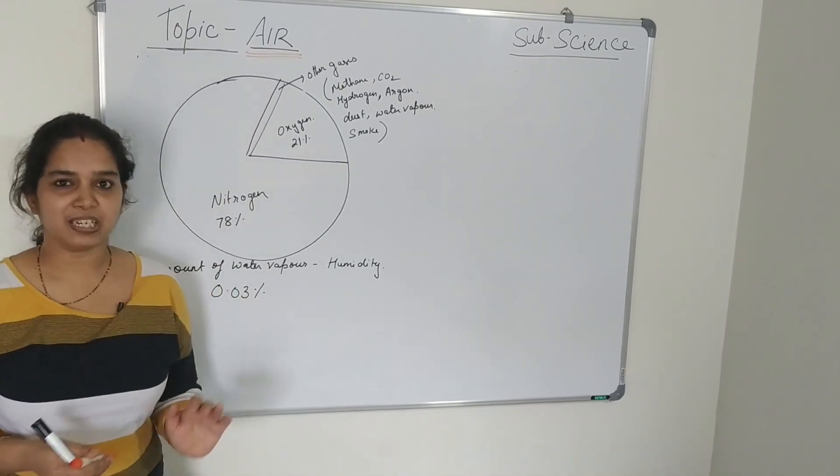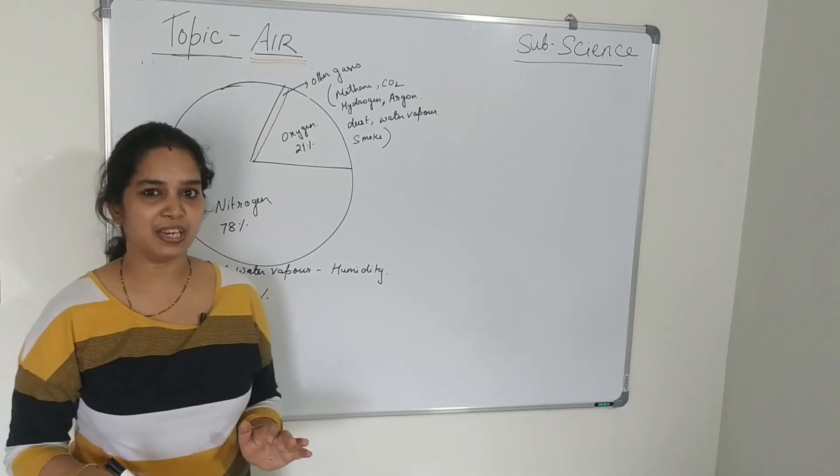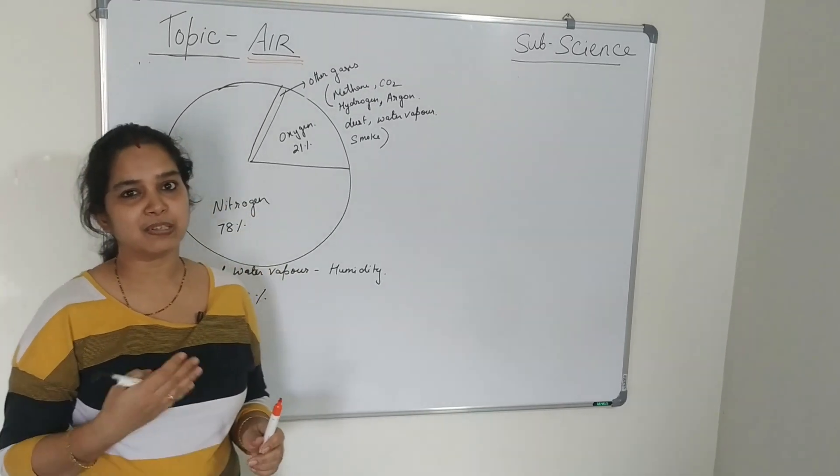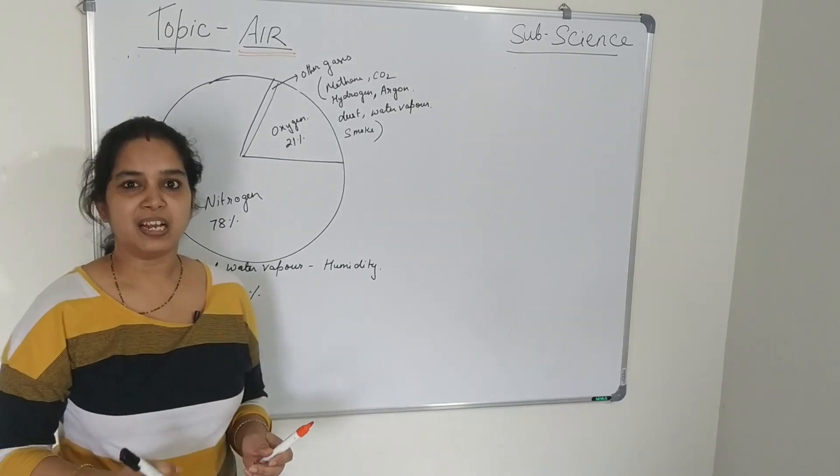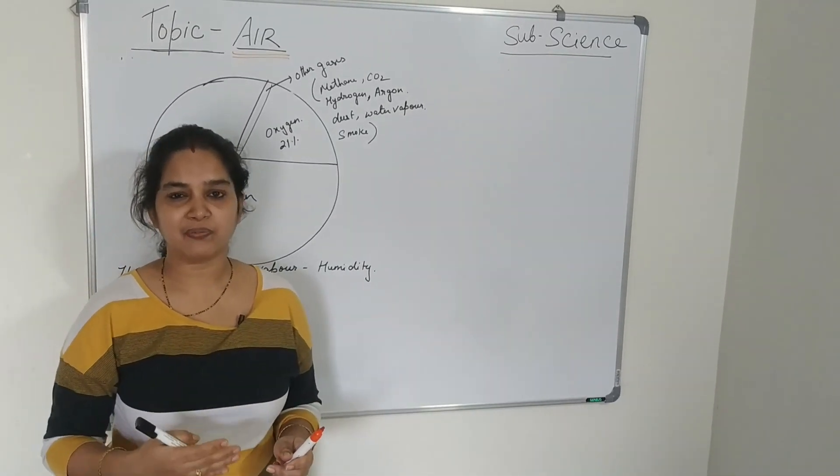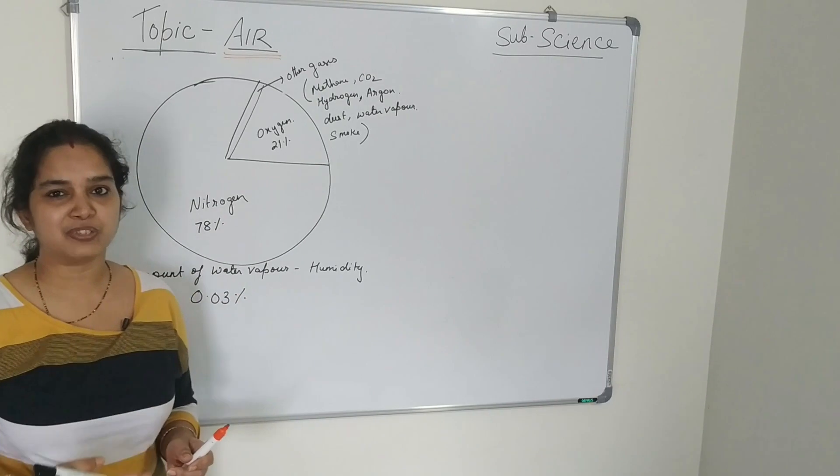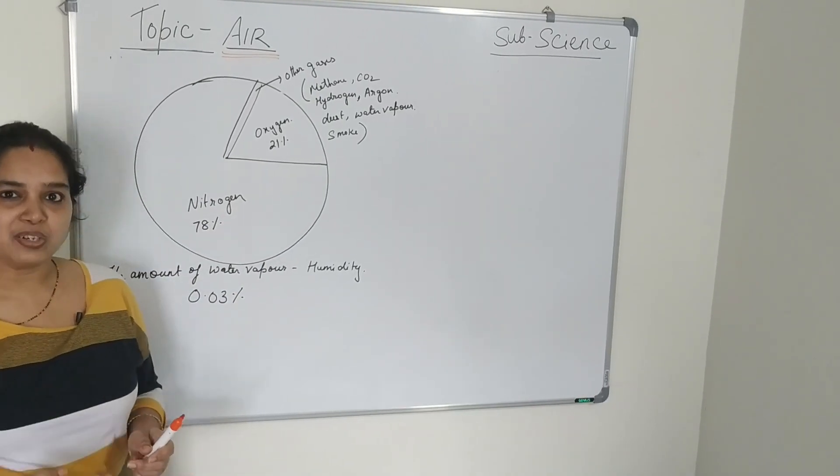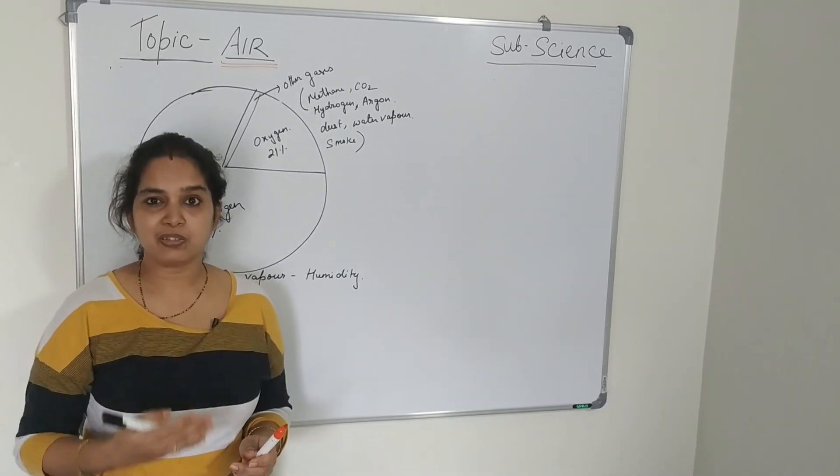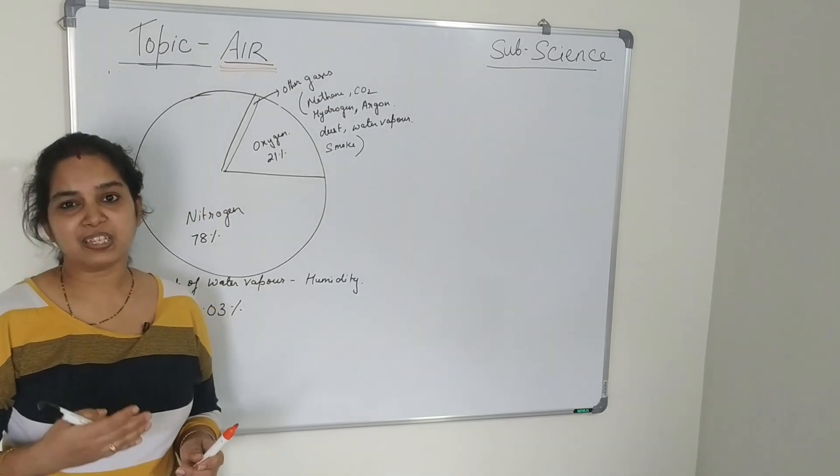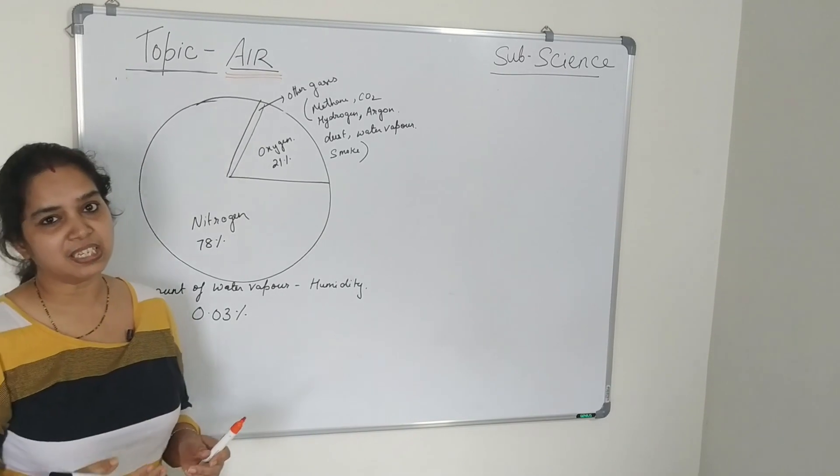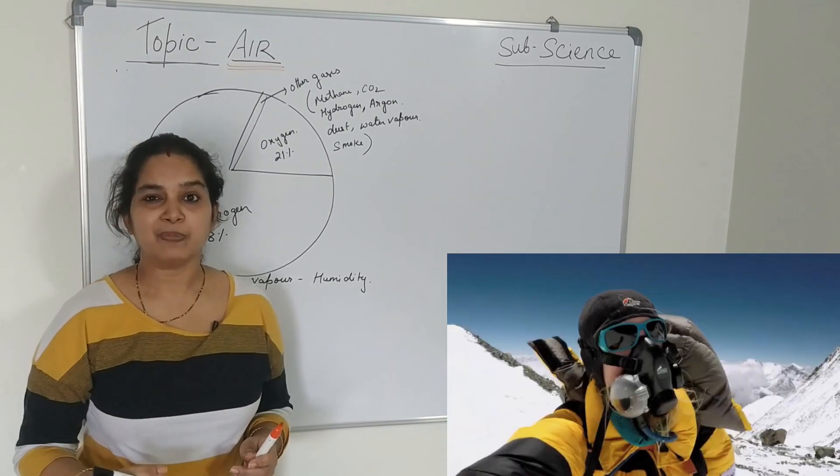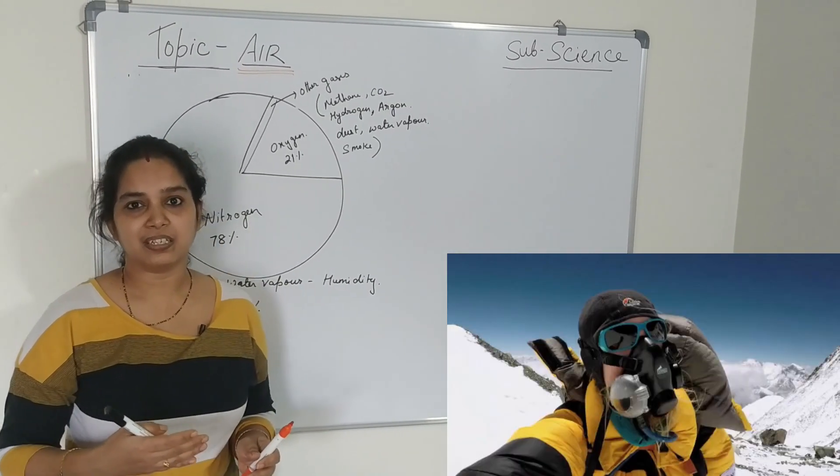So today we studied about the uses of air and about the atmosphere. That atmosphere has a mixture of gases and about the four layers of the atmosphere. That is the troposphere, stratosphere, ionosphere and the exosphere. And also that the atmosphere is very dense near the earth's surface. And the density decreases as we go up. So for this reason, the mountaineers carry the oxygen cylinder as they go up.